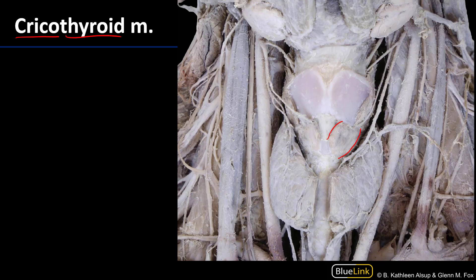When they are stimulated by those external branches of the superior laryngeal nerves, which we can see coming down there, they tip the thyroid cartilage anteriorly and inferiorly. So they're affecting motion at those cricothyroid joints, and that is going to put more tension on the vocal ligaments. Tension is proportional to pitch, so more tension equals more pitch. These are elevators of pitch.